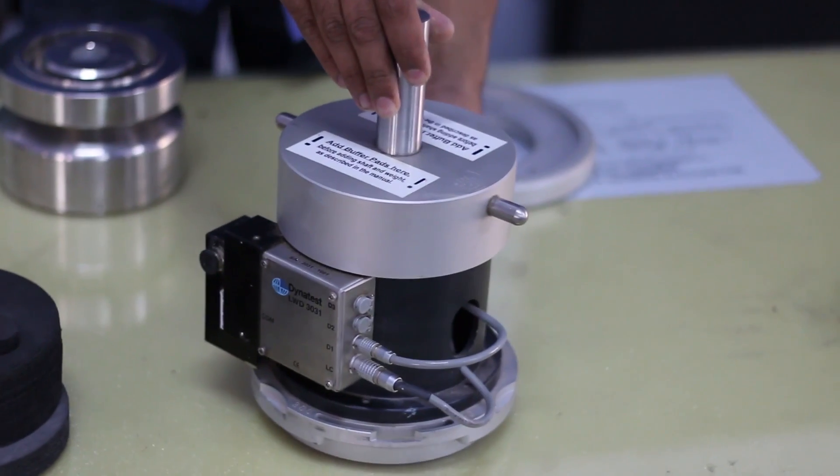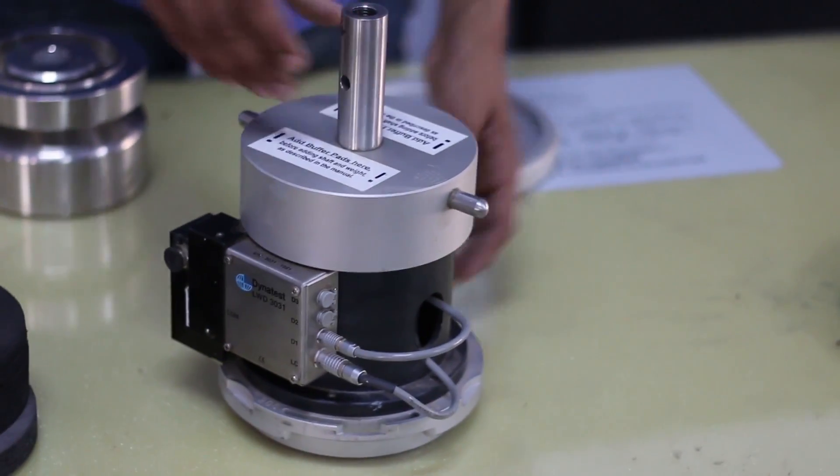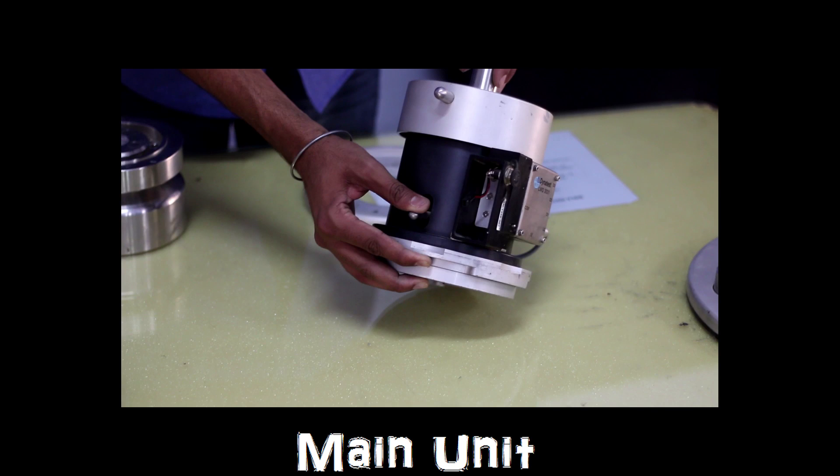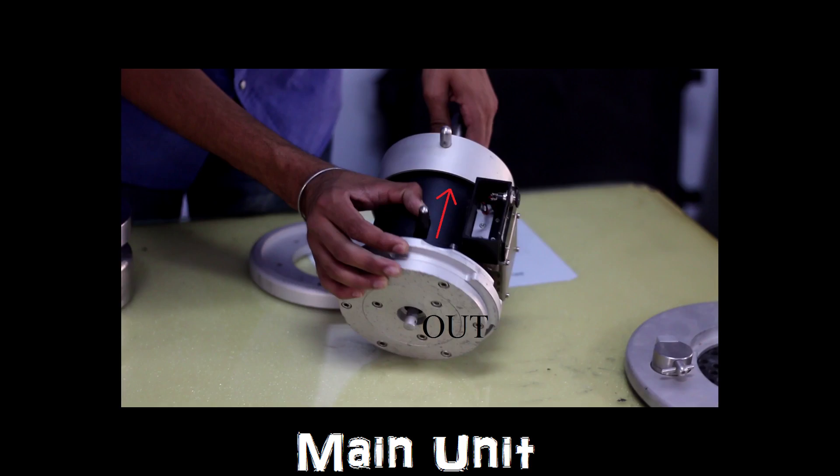This is known as the main unit. The main unit has an integral load cell, a center deflection sensor, electronics unit, wireless module with battery compartment. The main part is the center deflection sensor which has the geophone.